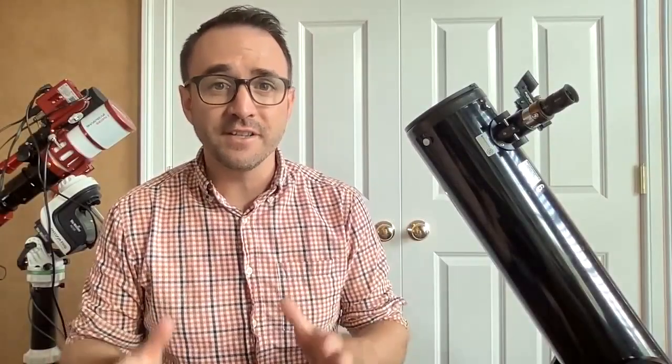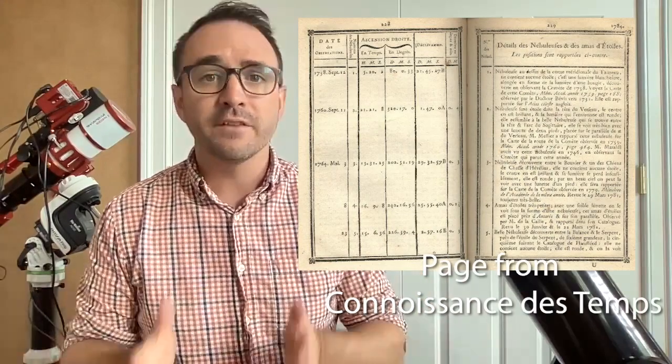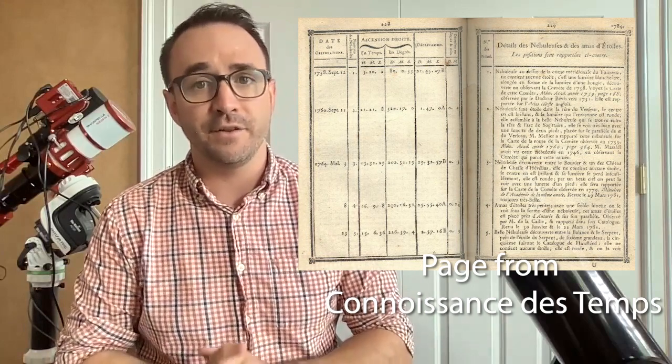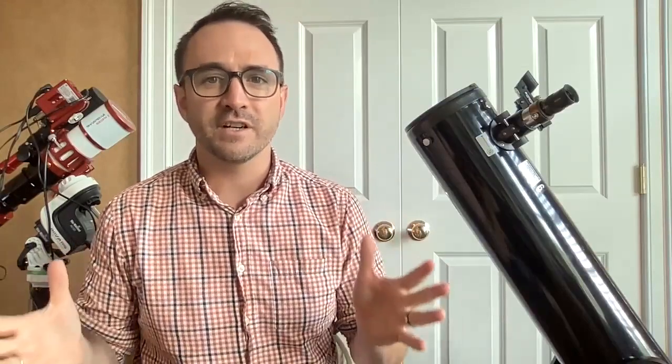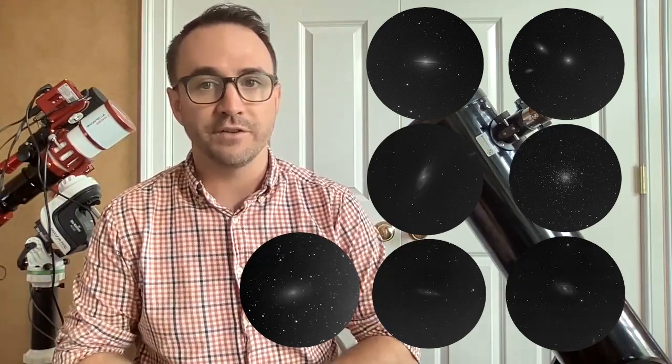This list of 110 astronomical objects was created by a French comet hunter named Charles Messier in the late 1700s. The list was originally published in a French astronomy journal called Connaissance des Temps. The list originally contained 103 objects, but in reviewing Charles Messier's notes, later astronomers added an additional seven objects, adding up to a total of 110. Some of these objects were discovered by Charles Messier or by his friend and collaborator Pierre Méchain, while some were discovered by other astronomers.